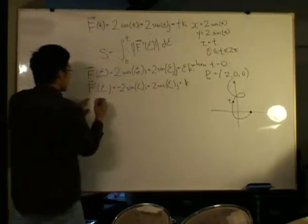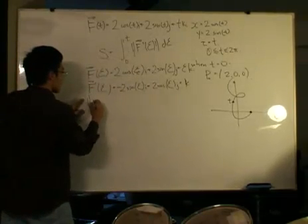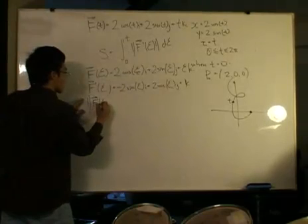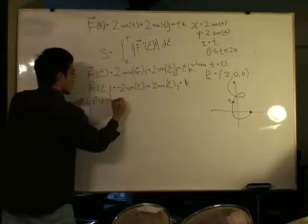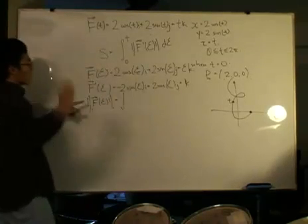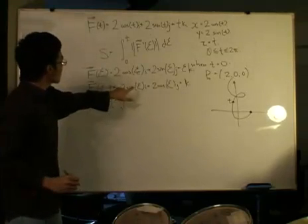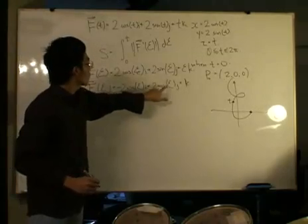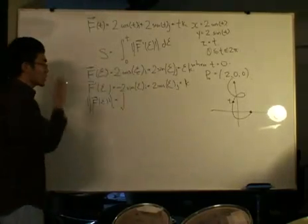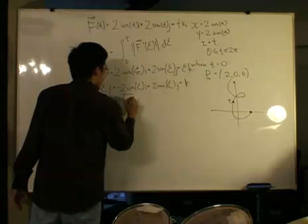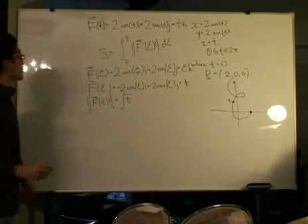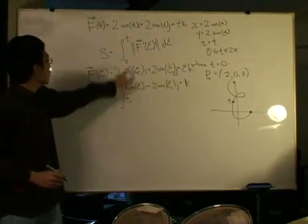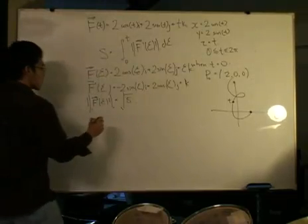Differentiate that with respect to the variable ζ. That would be -2 sin ζ i plus 2 cos ζ j plus 1 k. Then after that we want to take the magnitude of this so that later we can put it in and find the function s in terms of t. We find the magnitude of the derivative, which is: square these components. 4 sin² ζ plus 4 cos² ζ plus 1, so it will be √5.